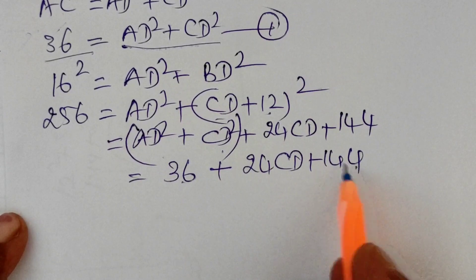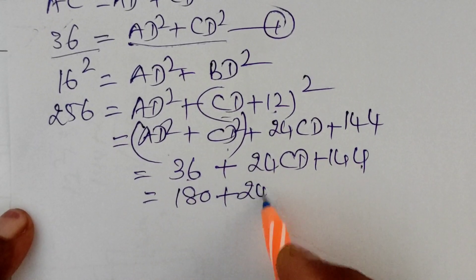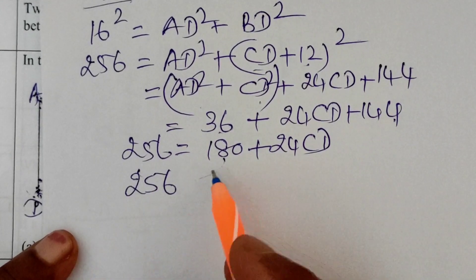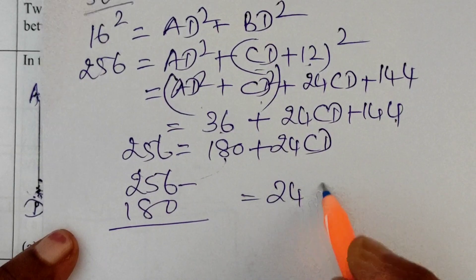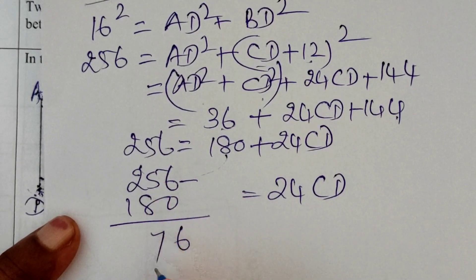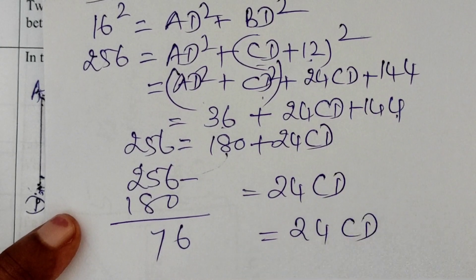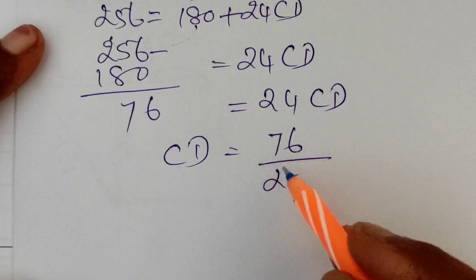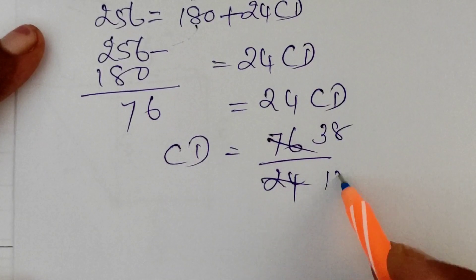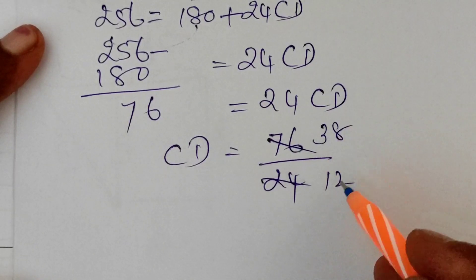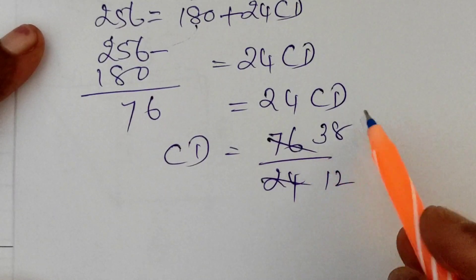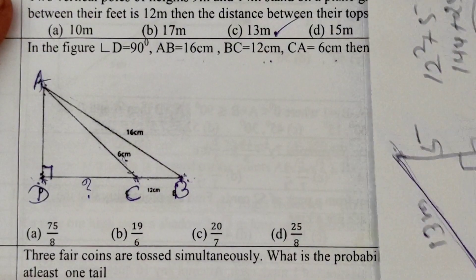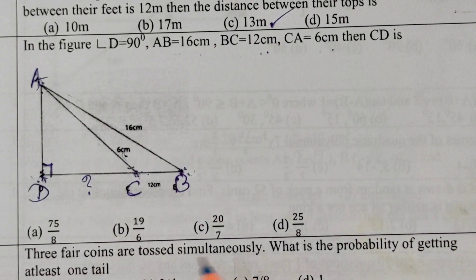So we have 180 + 24CD = 256. Transposing: 24CD = 256 − 180 = 76. Therefore CD = 76/24 = 19/6. The answer is 19/6.